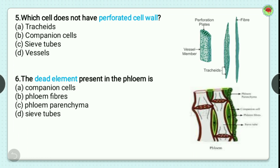Question number 5: which cell does not have a perforated cell wall? Options are tracheids, companion cell, sieve tubes, and vessels. In the image, the vessel member has a perforation plate — perforation means to sieve or filter. Perforation is present in vessel members, sieve tubes, and companion cells, but in tracheids the ends are very pointed and tapering. So the correct option is option A, tracheids.